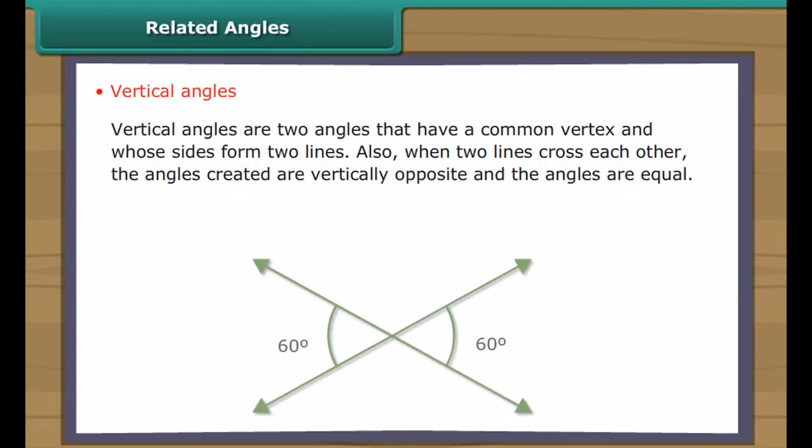Complementary angles are two angles whose measures add up to 90 degrees. Supplementary angles are two angles whose measures add up to 180 degrees. Adjacent angles are angles with a common vertex